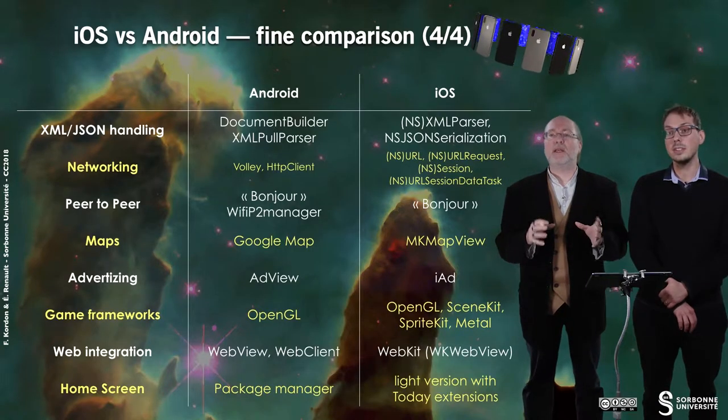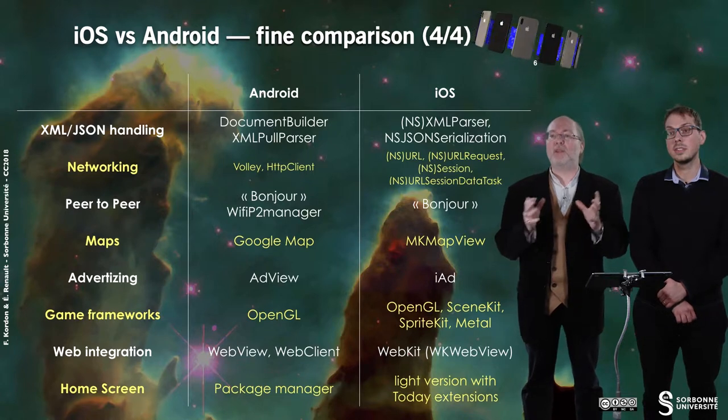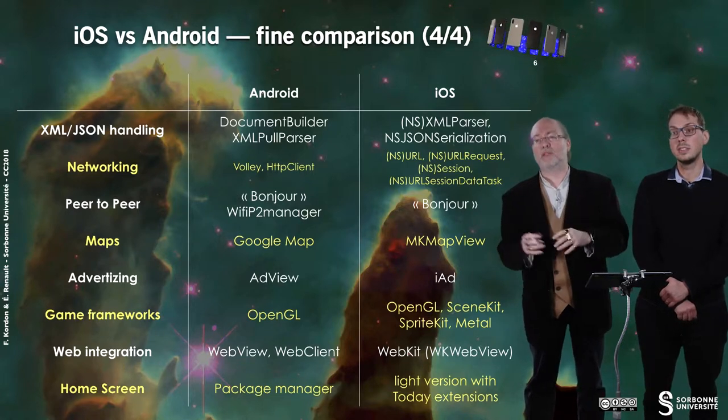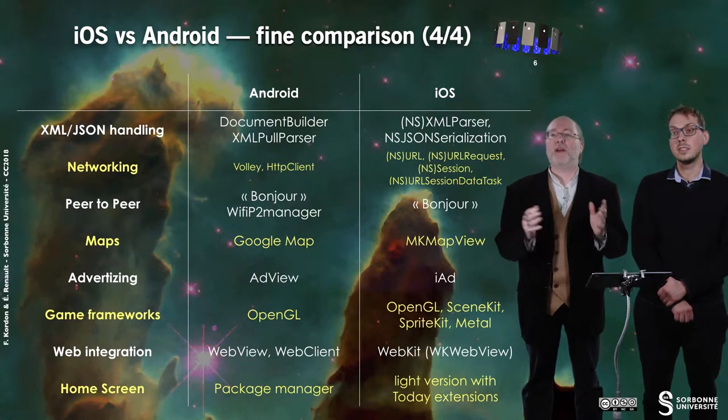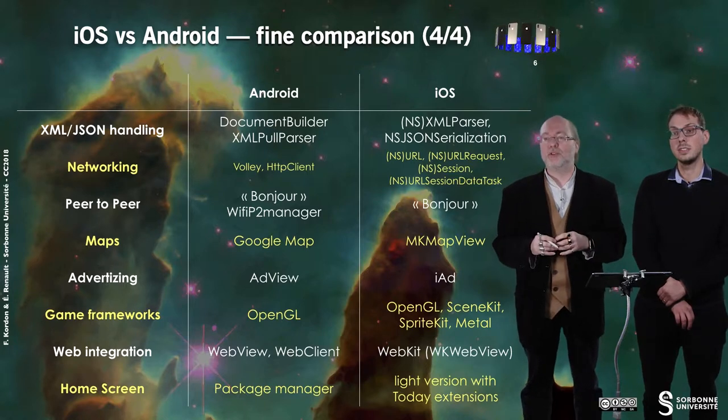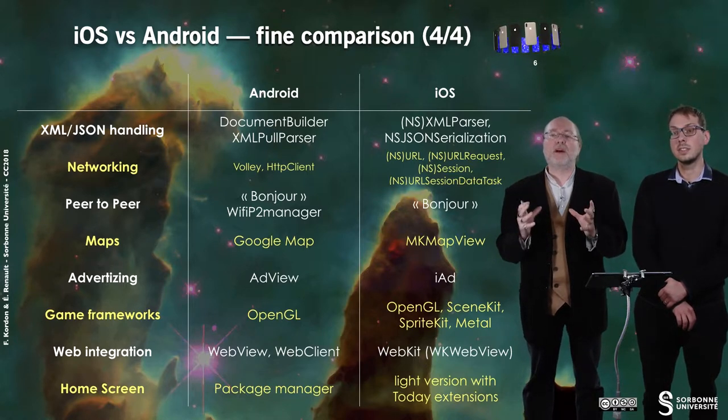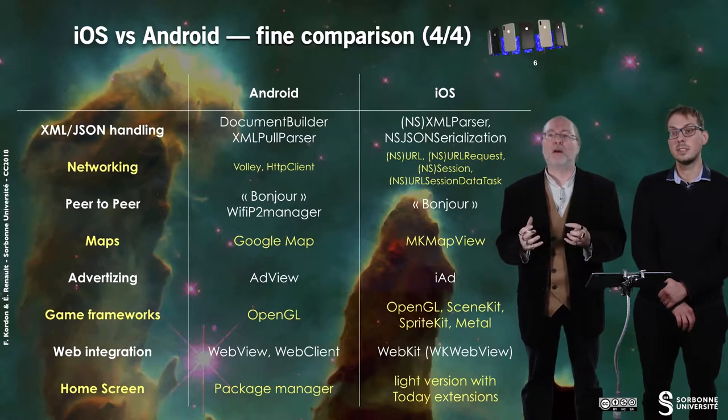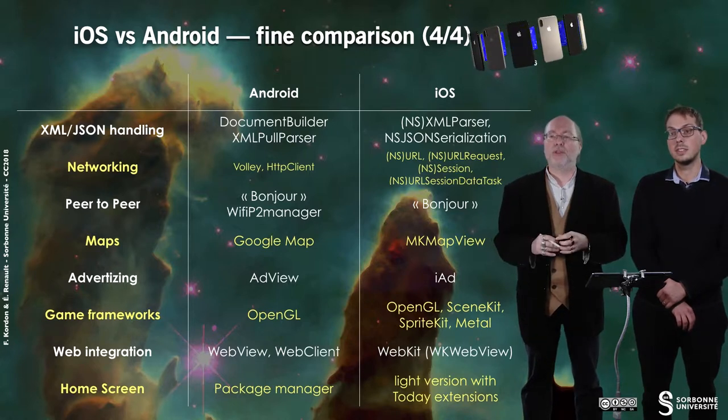For exchanging data, on Android there are many APIs. You can use XML or JSON through DocumentBuilder or XMLPullParser. In iOS it's more restricted: you have XMLParser (or NSXMLParser in Objective-C) and NSJSONSerialization for JSON. But in fact they work in a very standard way, so you may not be disoriented.